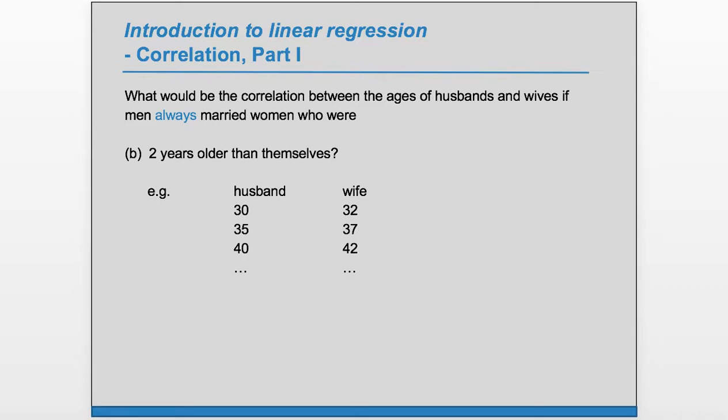If one is 30, the other would be 32. If one is 35, the other would be 37. We can see that as one goes up, the other also goes up. So this is also positive. And so we have r is positive one.